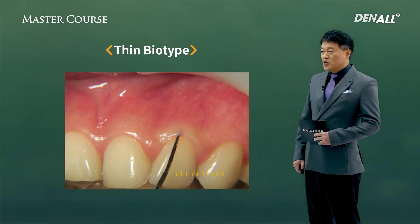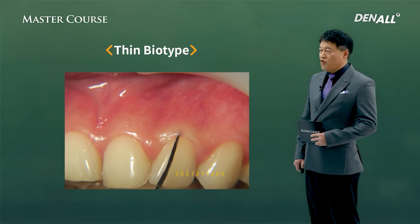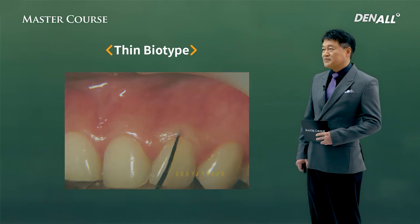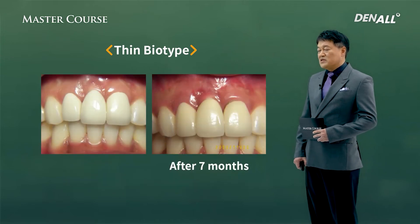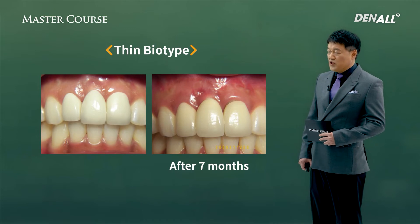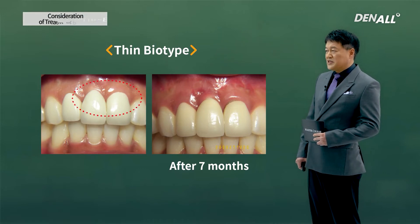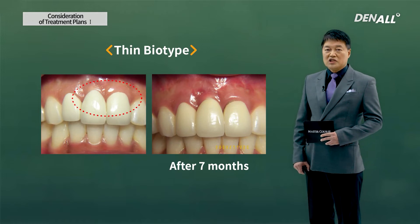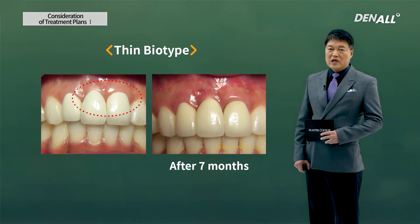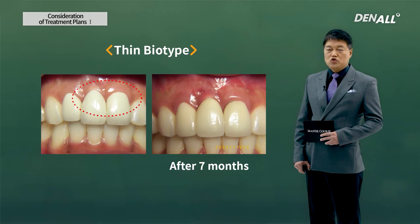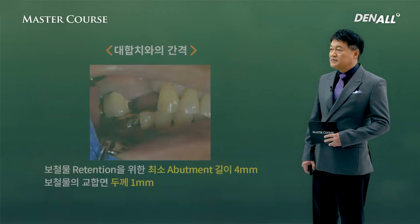In general, for thin biotype, if you check with the probe and you can see through, this is the thin biotype. In thin biotype, after you do prosthesis, you can see gingival recession. In the aesthetic anterior region, if the patient is thin biotype, recession can occur more easily, so you need to be more careful.